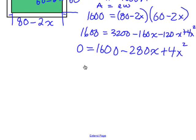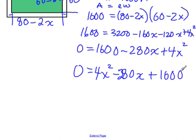1,600 equals, let's foil this out, 3,200 minus 160x minus 120x plus 4x squared. Let's rearrange things a little bit. Let's put a zero here. If I bring this over and subtract it, it'll be 1,600. That'll be minus 280x plus 4x squared. Let's rewrite it in standard form. So 4x squared minus 280x, I missed a two there, plus 1,600.